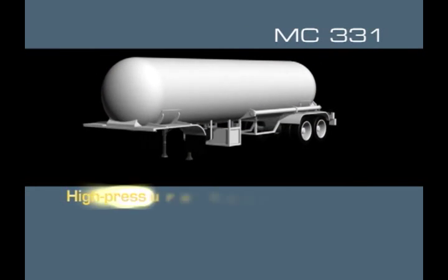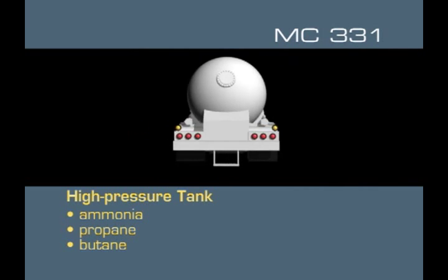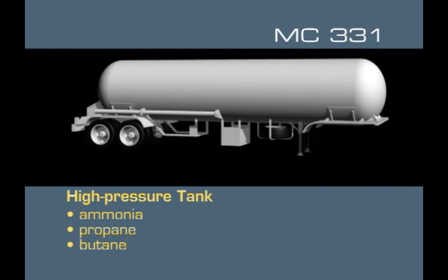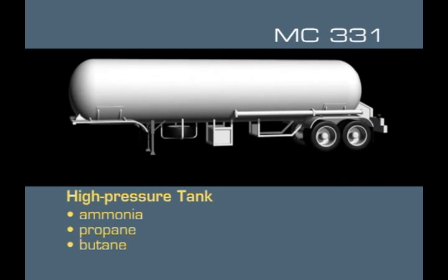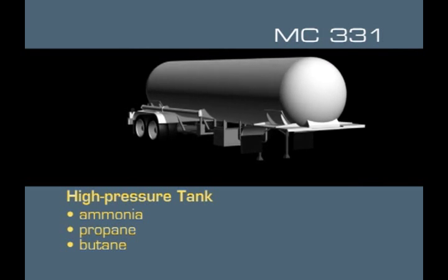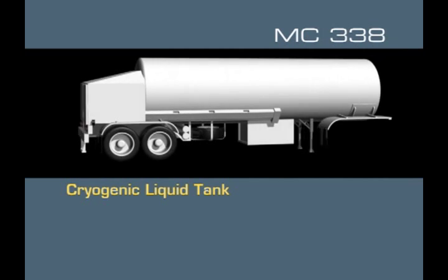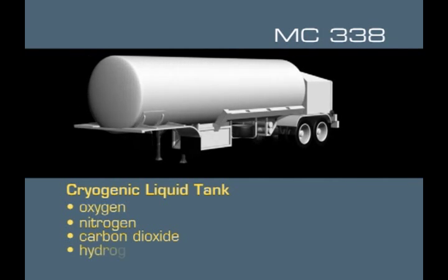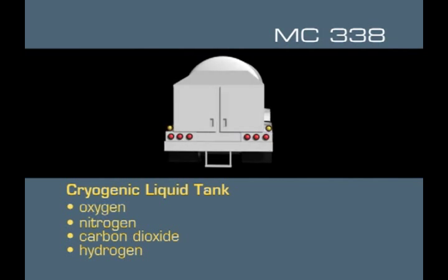The MC-331 high-pressure tank carries ammonia, propane, and butane. These are typically painted white or another reflective color and marked flammable or compressed gas. The MC-331 has round dome-shaped ends and looks like a cylinder in silhouette with internal and rear outlet valves. The MC-338 cryogenic liquid tank looks like a thermos bottle on wheels and carries liquid oxygen, nitrogen, carbon dioxide, and hydrogen. The loading valves are located in the rear and may be marked refrigerated liquid.